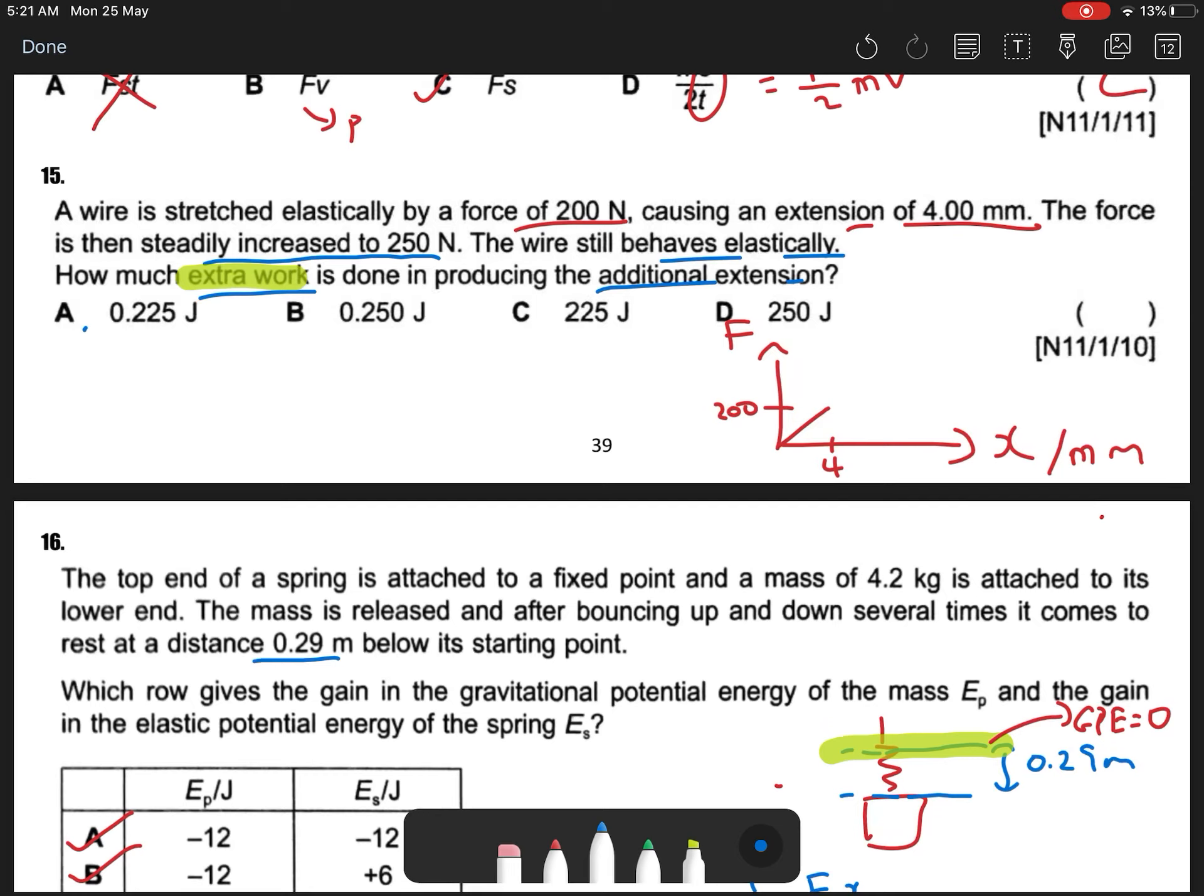So the force is steadily increased to 250. The wire still behaves elastically. How much work is done in producing the additional extension? So we don't know what is our additional extension, right?